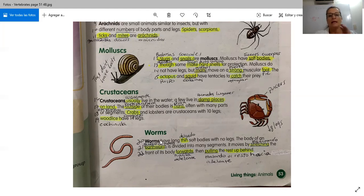Las lombrices tienen, perdón, los gusanos tienen cuerpos suaves, largos y delgados y no tienen patas. Tienen patas. Ellos se arrastran. El cuerpo de un gusano de tierra se divide en muchos segmentos. Miren los segmentos. Estos son segmentos, las divisiones. Se mueven estirando el frente de su cuerpo hacia adelante y después jalando el resto hacia adelante.